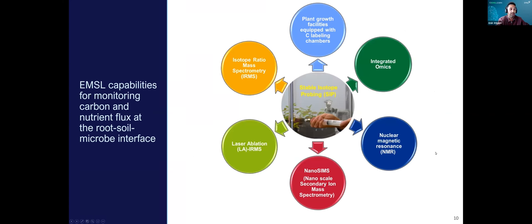In EMSL, we have different types of capabilities for monitoring carbon and nutrient fluxes in the rhizosphere. We use a SIP, or stable isotope probing approach, in which a substrate is enriched with a heavier stable isotope that is consumed by organisms — plants or microbes — to be tracked and studied. We also use integrated omics for metabolic flux analysis or even NMR. We have great NMR capabilities for samples that are not easily accessible, for example organic matter analysis in soil. NMR is very sensitive to isotopes, and solid-state NMR can also be used to track isotopes into plant and fungal cell walls.